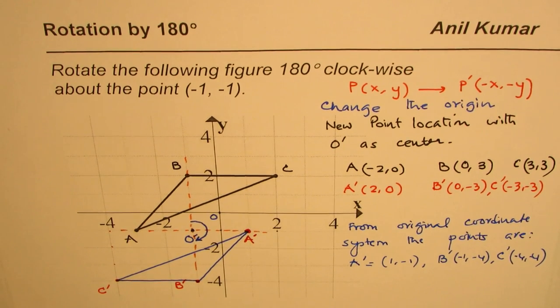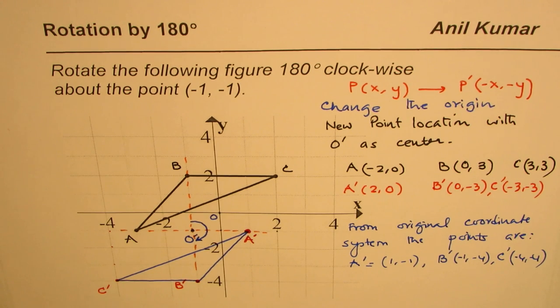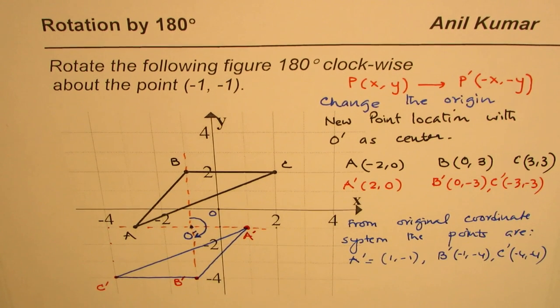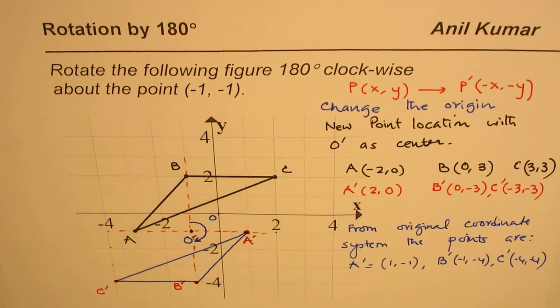That is how you can rotate a figure about a point which is not the origin by 180 degrees clockwise. I hope that helps. I'd like you to do the same rotation counterclockwise and check your results. I'm Anil Kumar. You can subscribe and share my videos. Thank you and all the best.